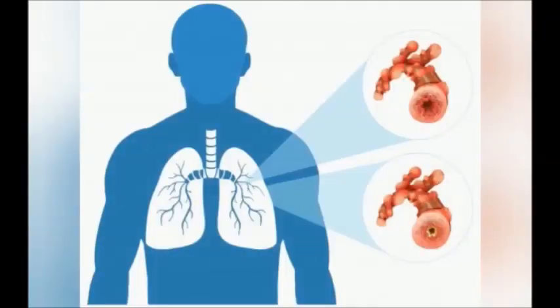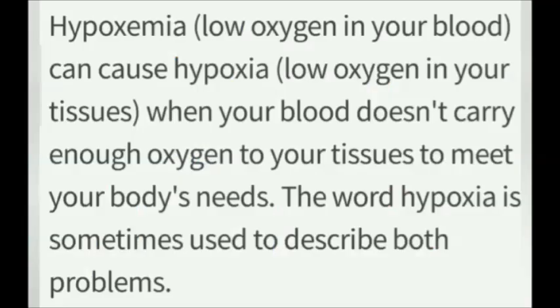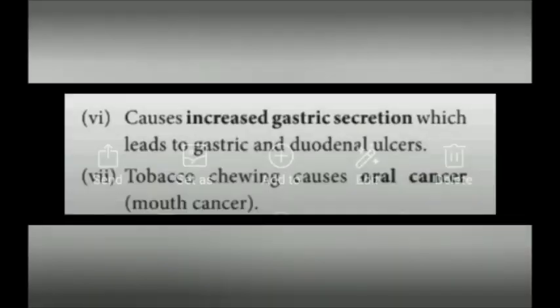Inflammation of lung alveoli decreases the surface area for gas exchange and causes emphysema. Carbon monoxide in tobacco smoke binds to hemoglobin of RBCs and decreases their oxygen-carrying capacity, causing hypoxia in body tissues. Smoking also causes increased gastric secretion leading to gastric and duodenal ulcers. Tobacco chewing causes mouth cancer.